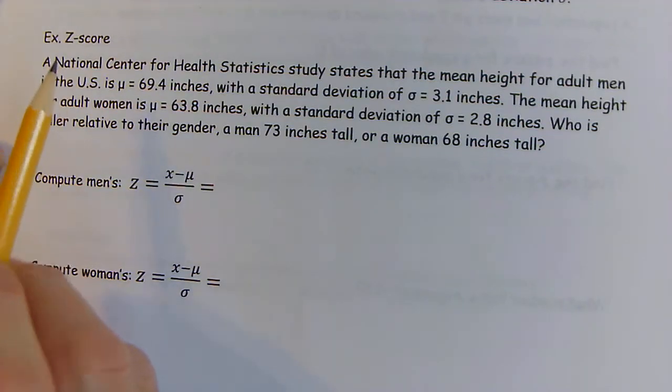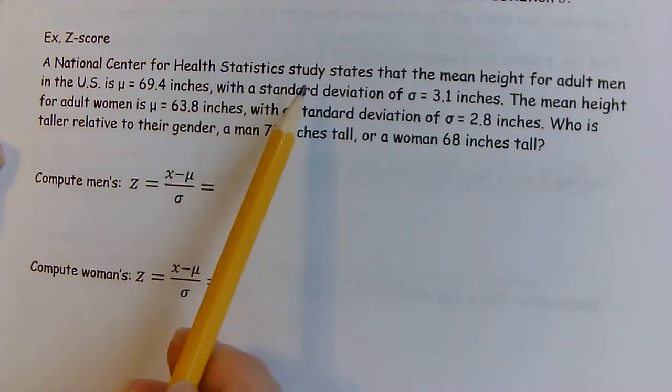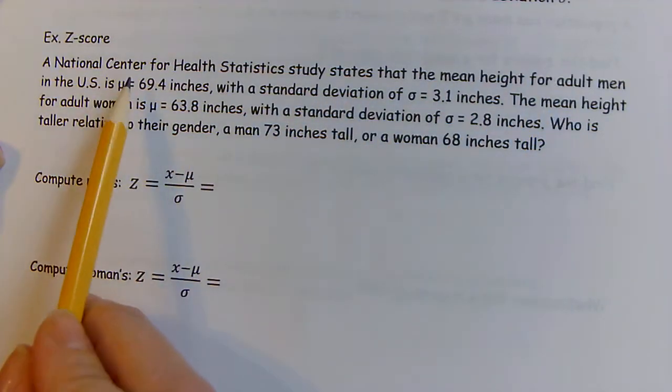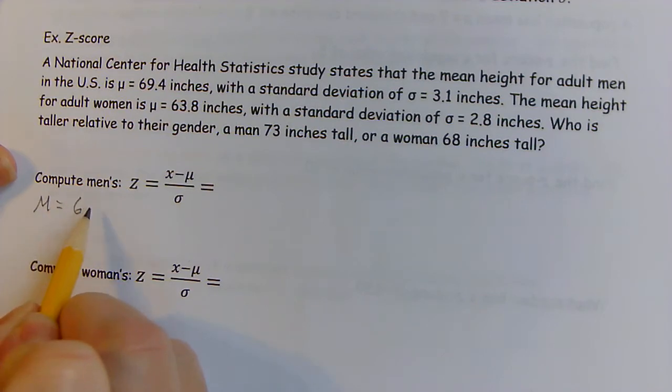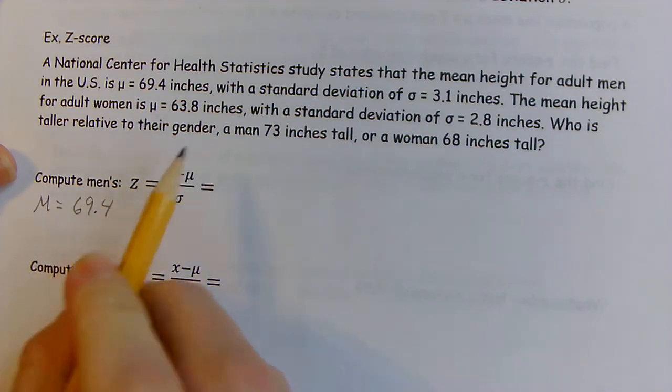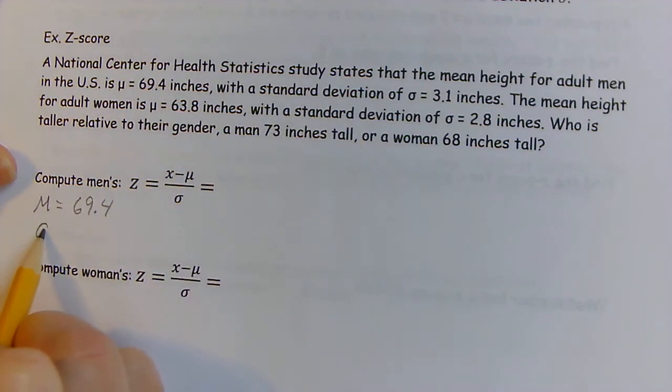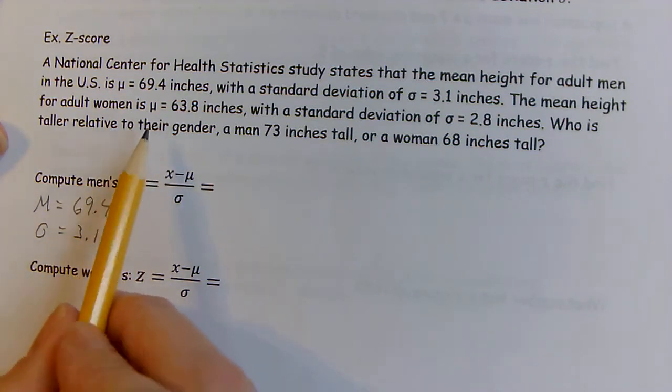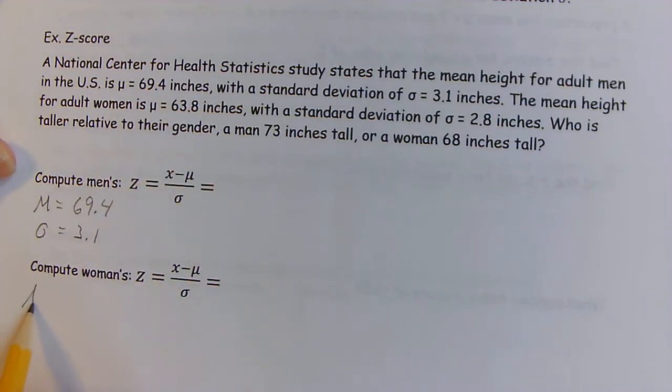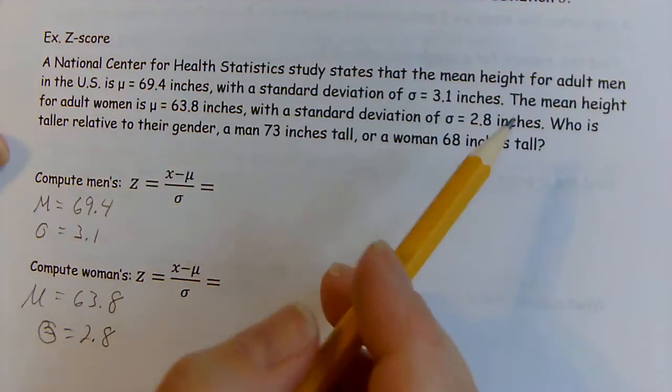So we're going to use a z-score for this problem. Mean height for adult men in the US, the population mean height for adult men is μ = 69.4 inches with a standard deviation of σ = 3.1. The mean height for adult women in the US, the population mean is μ = 63.8 with standard deviation σ = 2.8.